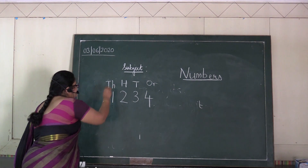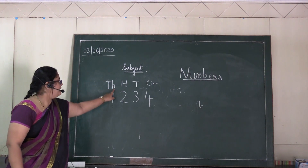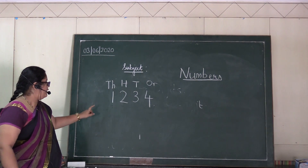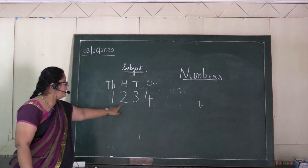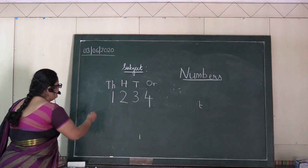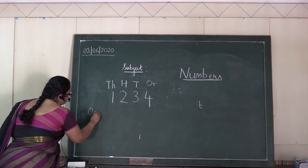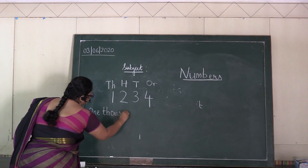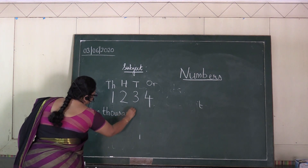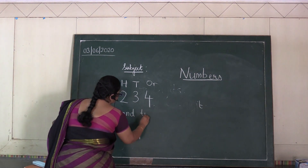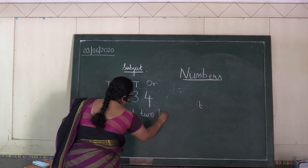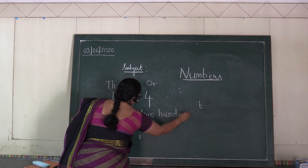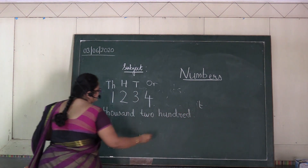We will write the thousandths place as capital T and small h. How will you write this number? One is in the thousandths place, then two hundred thirty-four.